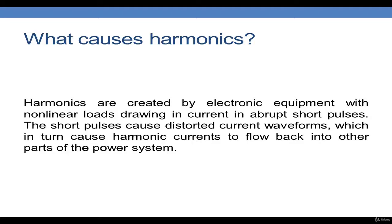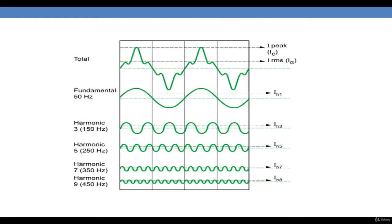Power electronic loads create distortions that superimpose on the fundamental frequency. Here we have the distorted current waveform, which can be resolved into several sine waves. The fundamental frequency is at 50 Hz. The third harmonic is three times the fundamental, which is 150 Hz, followed by the fifth and seventh harmonics. In power systems we are mostly concerned about the third, fifth, and seventh harmonics, and we neglect the ninth, eleventh, and so on, because their magnitudes are very small.